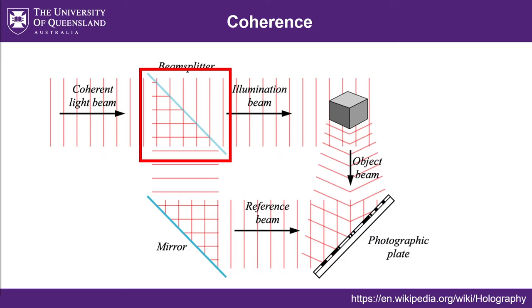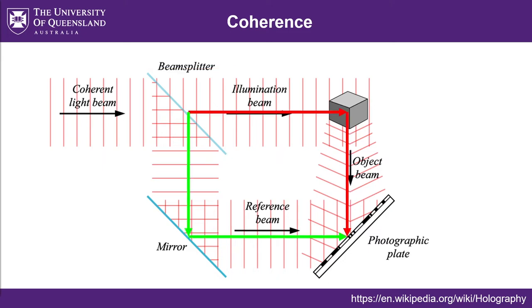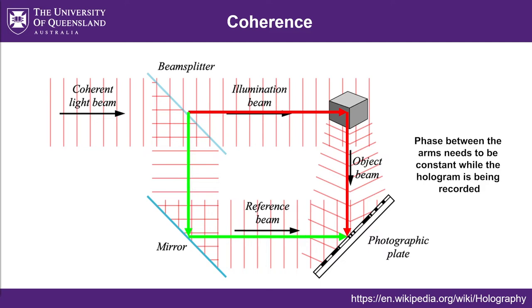The path length the object wave takes between the beam splitter and the recording plate, and the path length the reference wave takes, are illustrated as being the same length. Those two paths don't have to be exactly the same length, but the tolerable path length difference will depend on the coherence length of your light source and the exposure time of your recording medium. For digital holography the same principle applies — it's the exposure time of your camera rather than the film. If you need to expose for a long time, you'll need the relative phase between the two paths to be stable over that recording period.